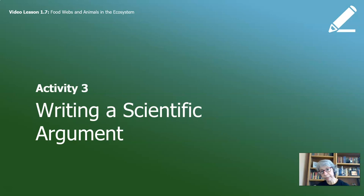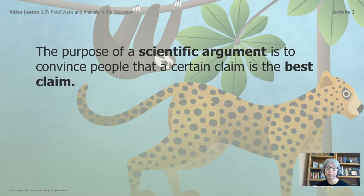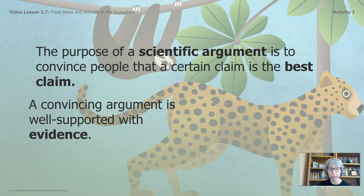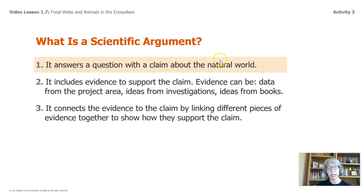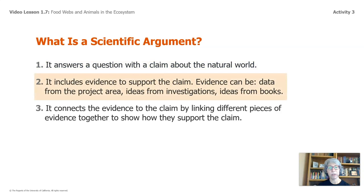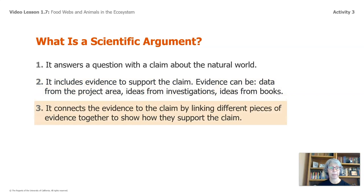We're going to activity three where we're going to write a scientific argument. Remember, the best idea needs to be moved forward. The purpose of a scientific argument is to convince people that a certain claim is the best claim. A convincing argument is well supported with evidence. A scientific argument answers a question with a claim about the natural world, includes evidence to support the claim — data from the project area, ideas from investigations, ideas from books — and connects the evidence to the claim by linking different pieces of evidence together.